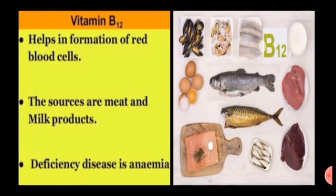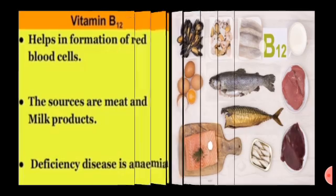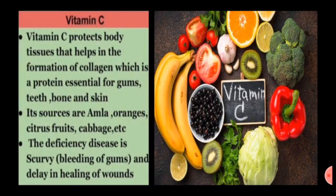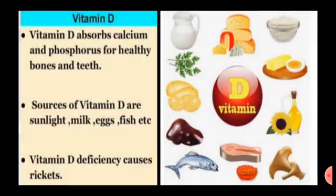Vitamin B12 is involved in the formation of red blood cells; sources are meat and milk products; deficiency disease is anemia. Vitamin C protects body tissue and aids in the formation of collagen, a protein essential for gums, teeth, bones, and skin; sources are amla, kiwi, oranges and other citrus fruits, cabbage, tomatoes, and green leafy vegetables. The deficiency disease is scurvy — bleeding of gums, thyroid malfunction, and delay in healing of wounds. Vitamin D helps absorb calcium and phosphorus for healthy bones and teeth; sources are sunlight, milk, eggs, and fish.